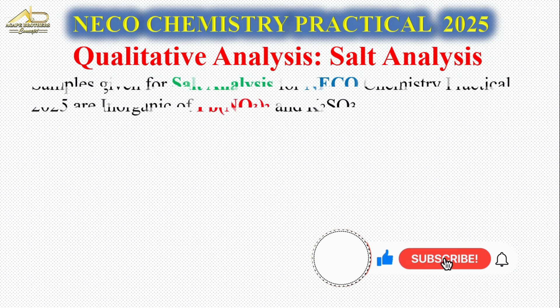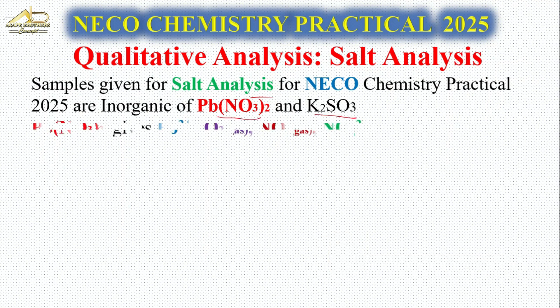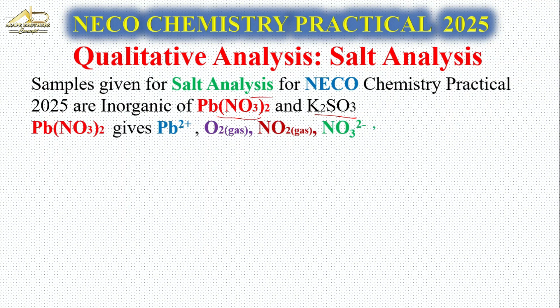So let's look at the sample given for salt analysis for NECO 2025. We have Pb(NO₃)₂ and K₂SO₃. If you analyze this salt, you're going to have Pb²⁺ as the cation, and you'll be having O₂, NO₂, and NO₃⁻ ions as the anions.